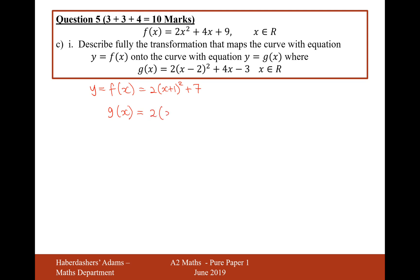It's going to be 2 brackets x squared minus 4x plus 4 plus 4x minus 3. Let's now expand those brackets. 2x squared minus 8x plus 8 plus 4x minus 3. Let's now simplify what we've got there. 2x squared minus 4x plus 5.